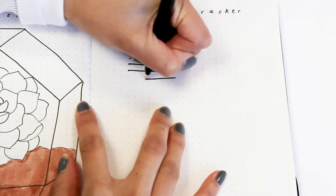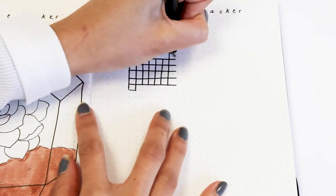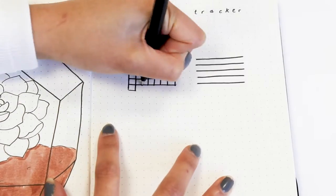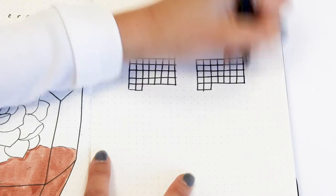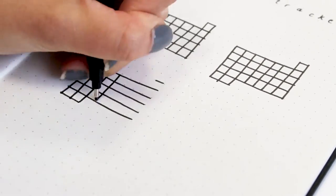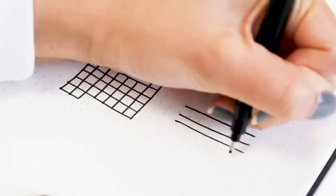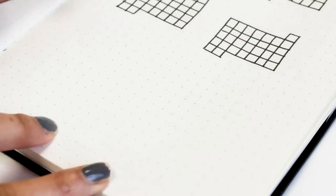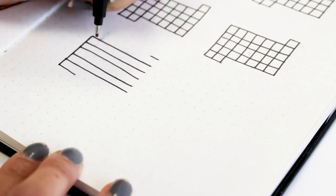Next is my habit tracker and I'm keeping it simple by using the same layout that I always use, and that is the calendar format. I'm really hoping that this month I will actually get to track my habits more because I really like tracking my habits in my bullet journal. I find it really useful just to see what habits I should work harder on.